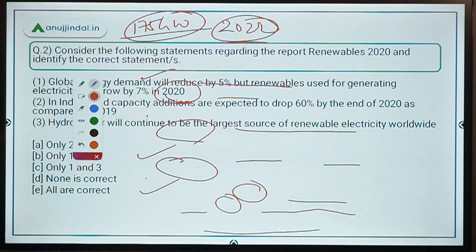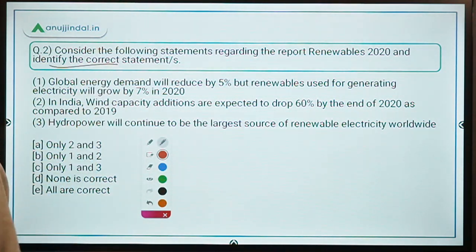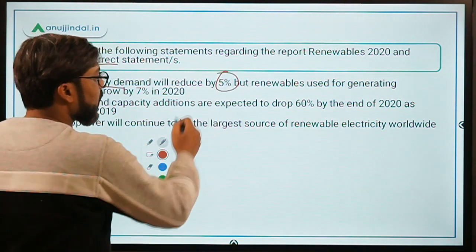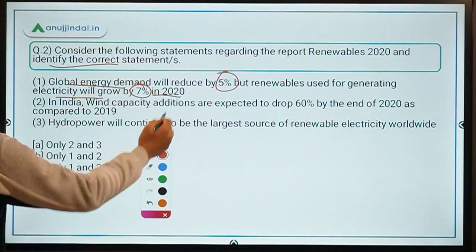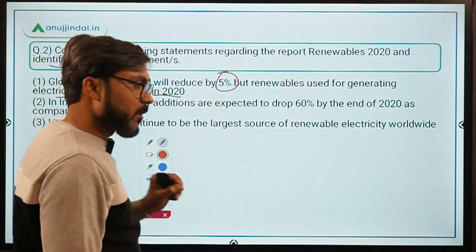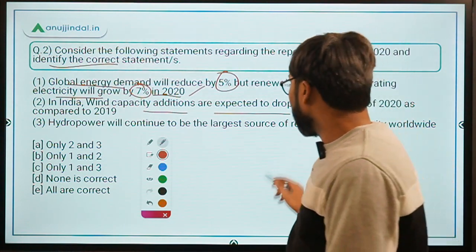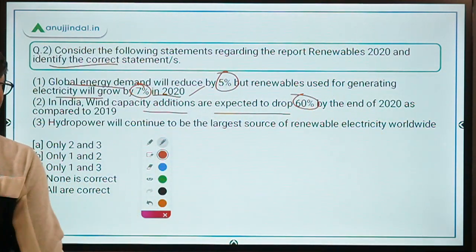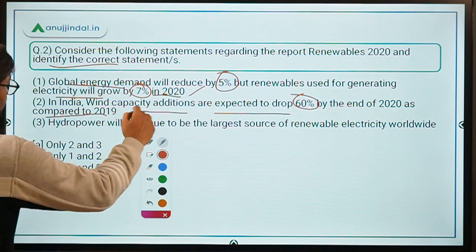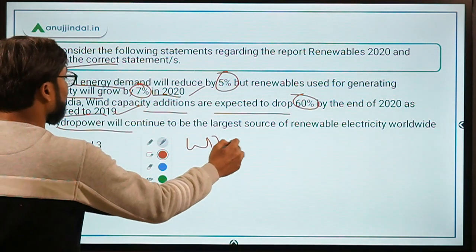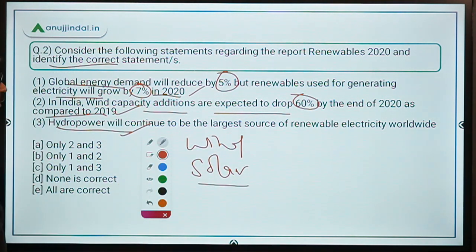India has a target to produce 175 gigawatts of renewable energy by the year 2022. Coming back to the question, the correct statements are: global energy demand will reduce by 5% but renewables for electricity will grow by 7% in 2020; wind capacity additions in India are expected to drop 60% by end of 2020 compared to 2019; and hydropower will continue to be the largest source of renewable electricity worldwide, followed by wind and solar. All three statements are correct — option all are correct is the answer.